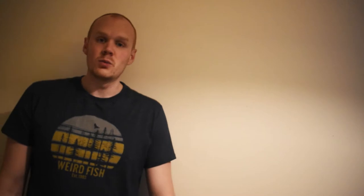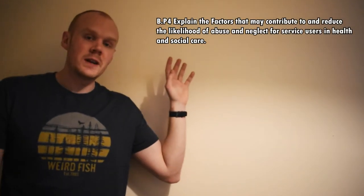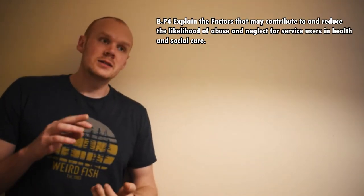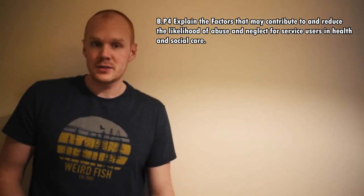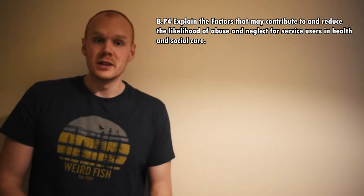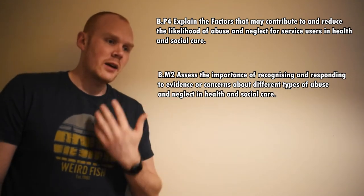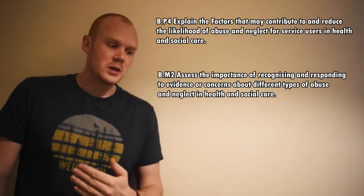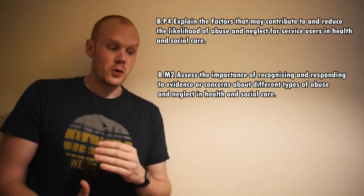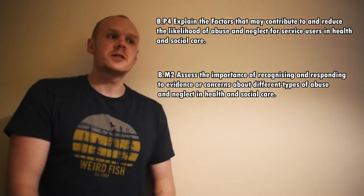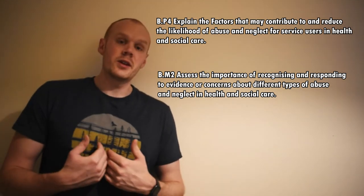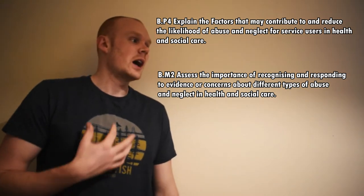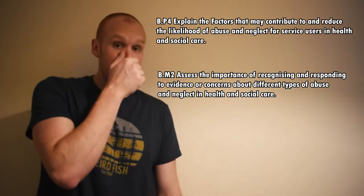In terms of our assignment, we have to write about it in the following way. We first have to explain the factors which both contribute to and reduce the likelihood of abuse — that's the pass criteria. For our merit, we have to explain why this means we essentially have to look out for abuse ourselves. There are factors which make things more likely to happen, so what can we do that reduces this likelihood or helps to mitigate it? That's the merit criteria.